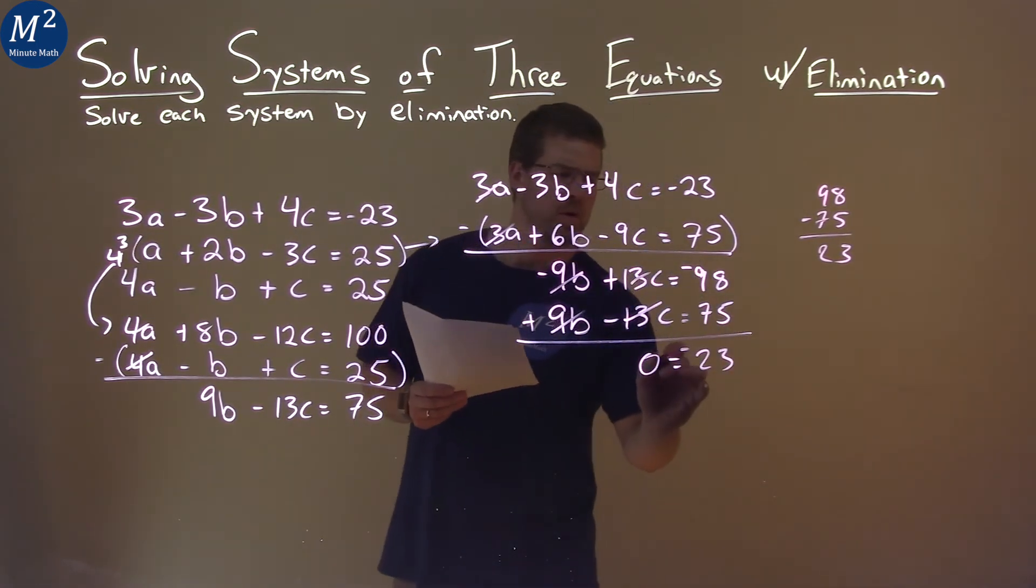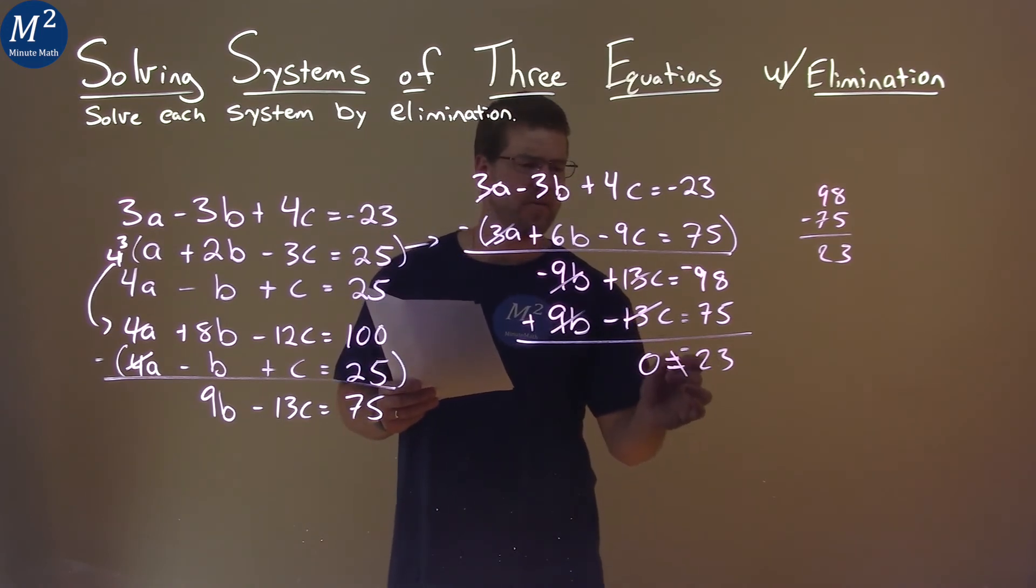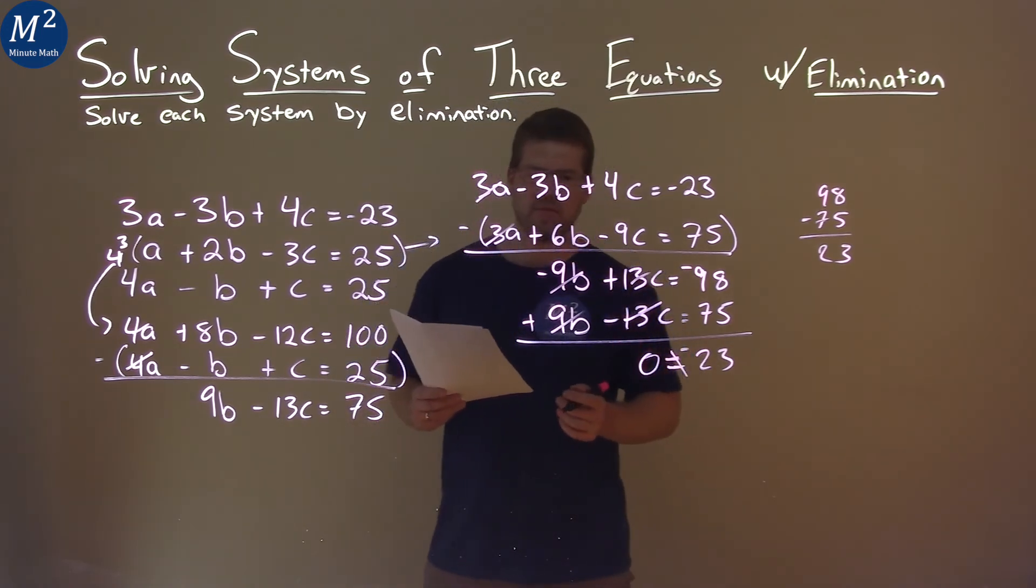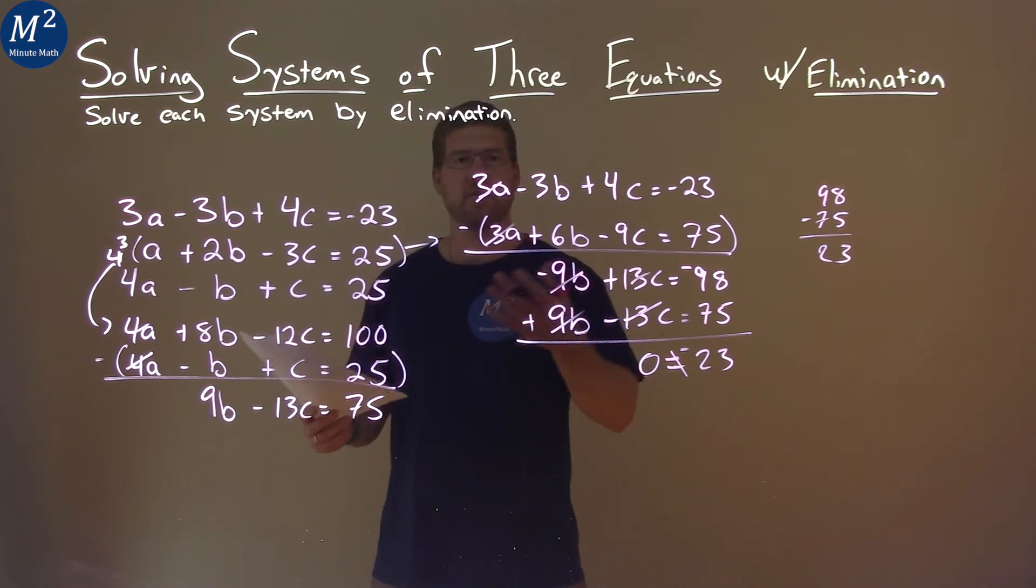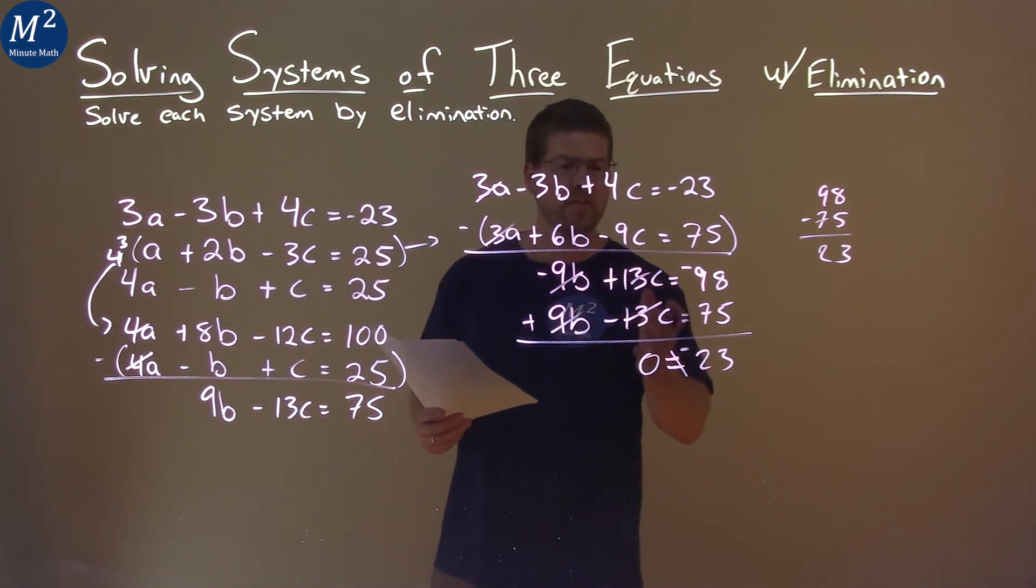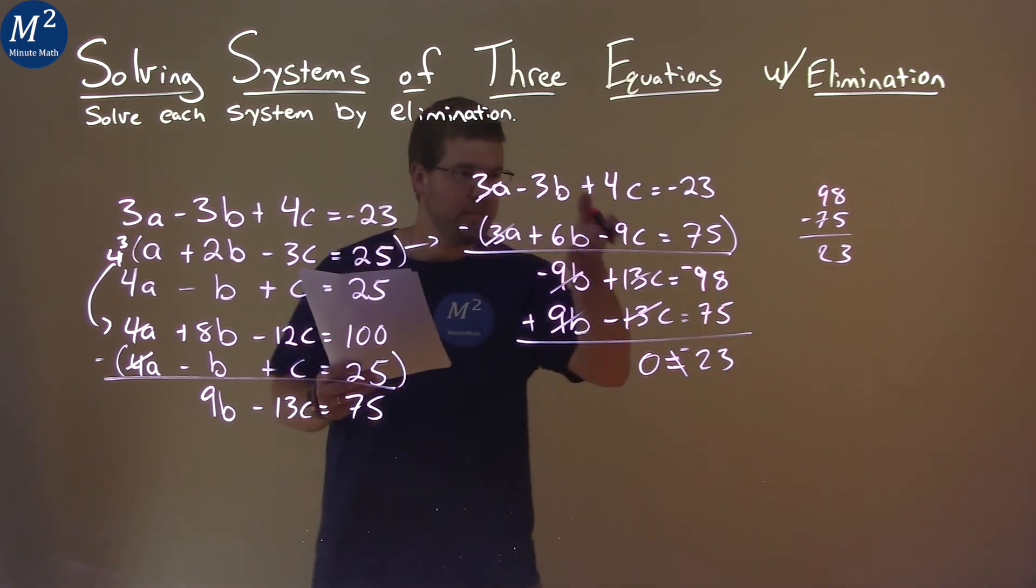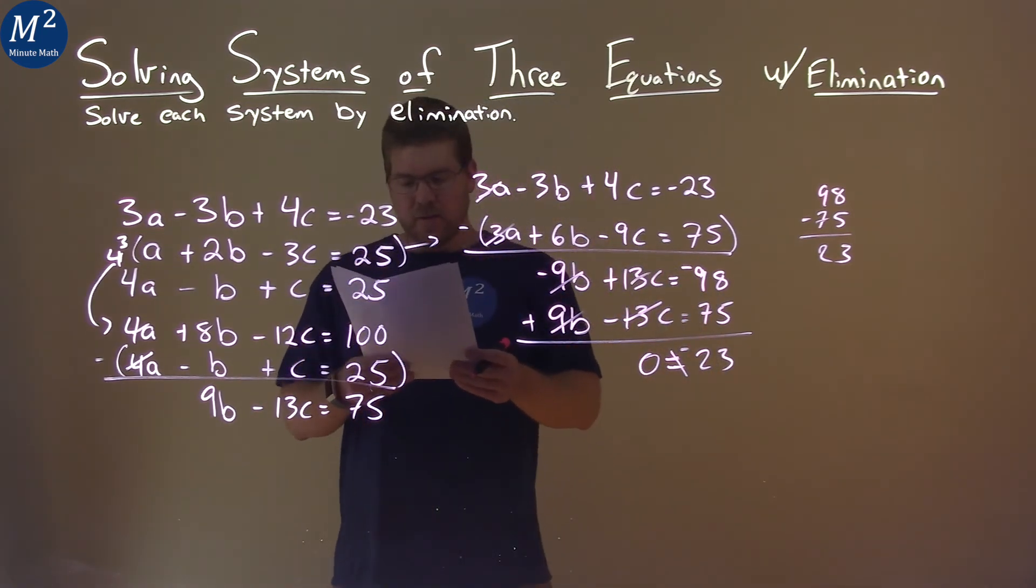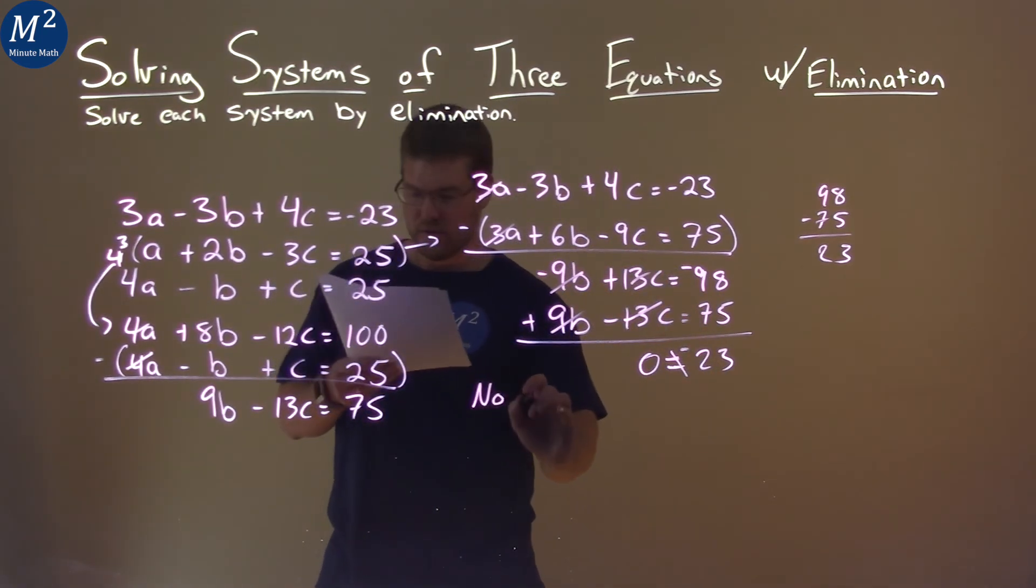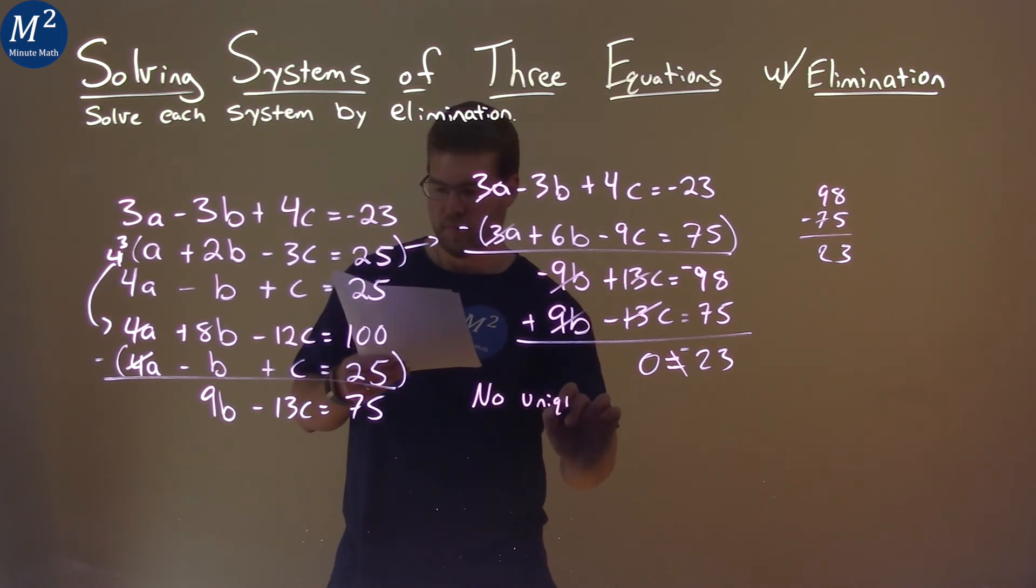Well, does 0 equal negative 23? No. 0 does not equal negative 23. So what does that mean in the context of this problem here? When this happens and you come up with something that's not equal to, if all the variables are eliminated, this is what happens. This is a no unique solution.